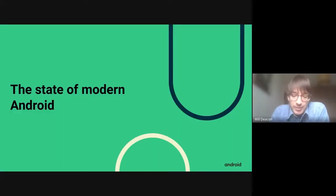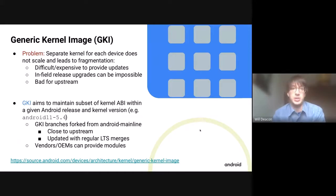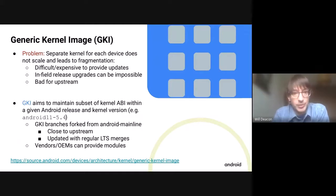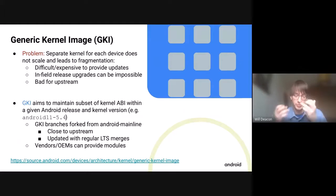Before I talk about the KVM and virtualization side of things, I need to talk a bit about the state of modern Android to motivate why we're doing what we're doing. The latest thing in the Android system space is this thing called Generic Kernel Image, or GKI. You might have heard of it — there's a link where you can read about it on source.android.com, there are some LWN articles, and it's been mentioned at Linux Plumbers. What GKI is about is tackling the problem that traditionally there's a separate kernel for each Android device. Different Android handsets are all running their own kernel. Clearly this doesn't scale — it leads to horrible fragmentation.